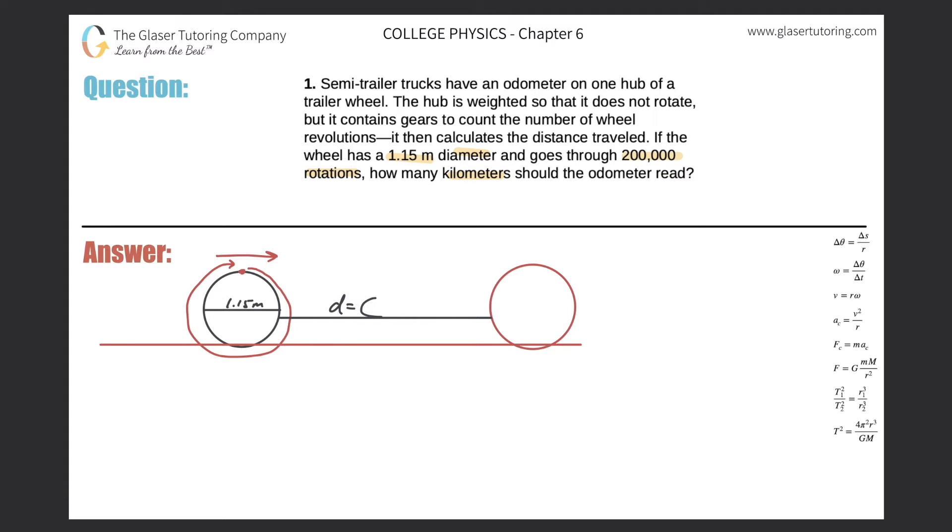How can we find the circumference of a wheel? Well, remember, the circumference is equal to πd, or in other words, circumference is equal to 2πr. We have the diameter, so let's use that. It's πd, so the diameter was 1.15, so the circumference here should be 1.15 times π, which is 3.61 meters.